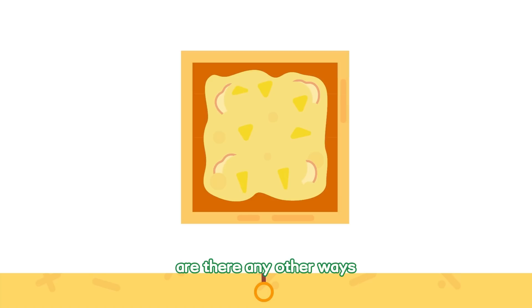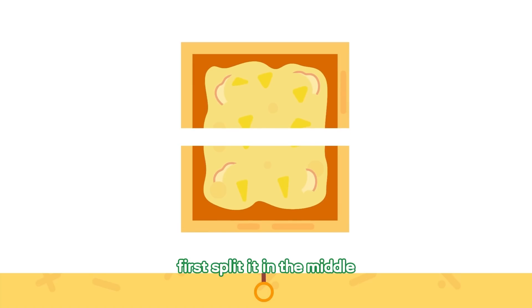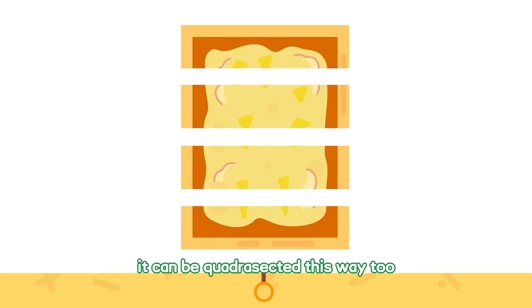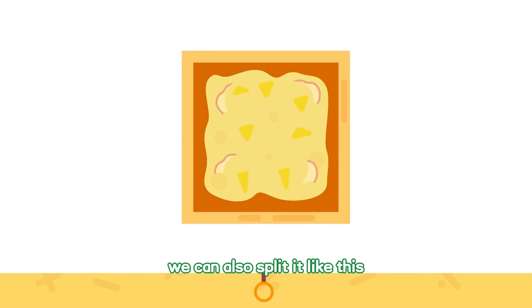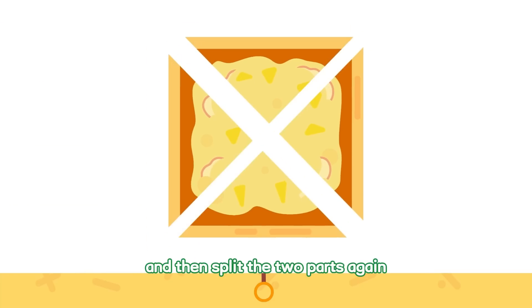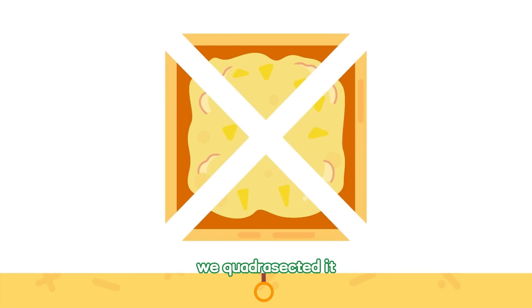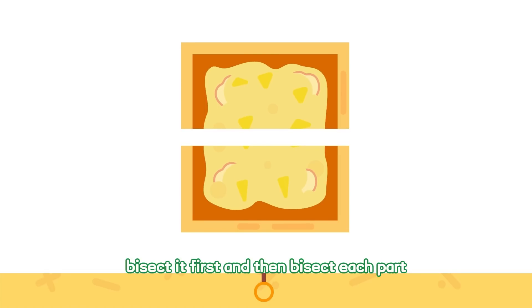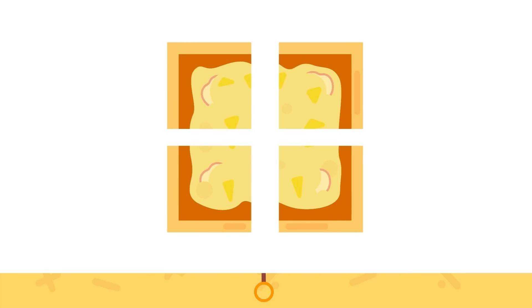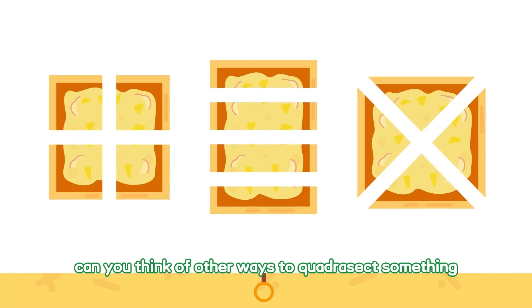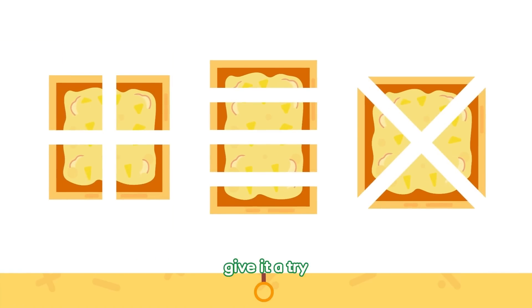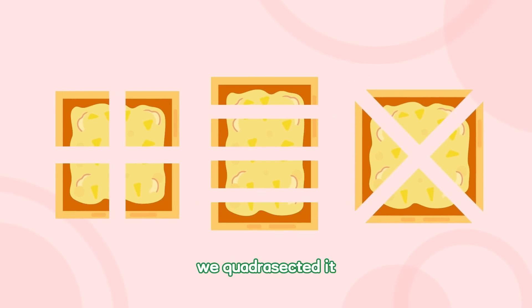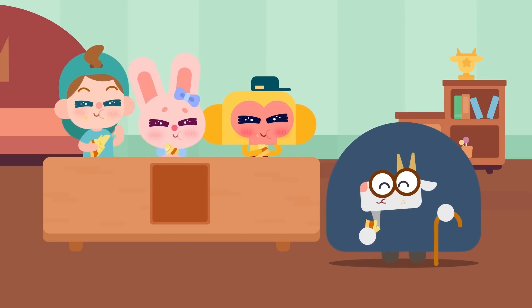Are there any other ways? First, split it in the middle and then split each part in the middle again! It can be quadricected this way too! We can also split it like this and then split the two parts once again! We quadricected it! If you want to quadricect something, bisect it first and then bisect each part! Can you think of other ways to quadricect something? Give it a try! Bisect once and then bisect each part — we quadricected it! Yummy!